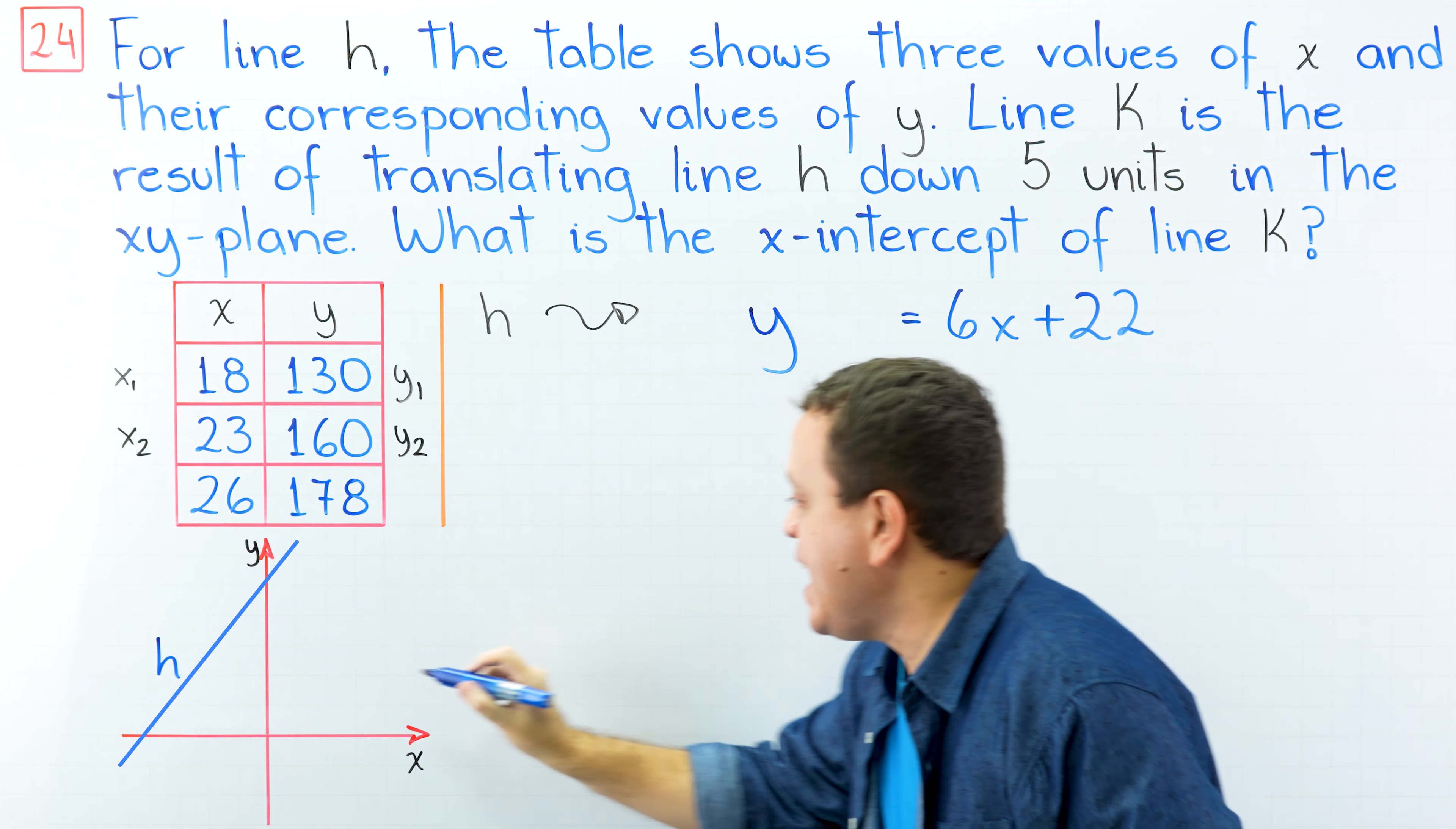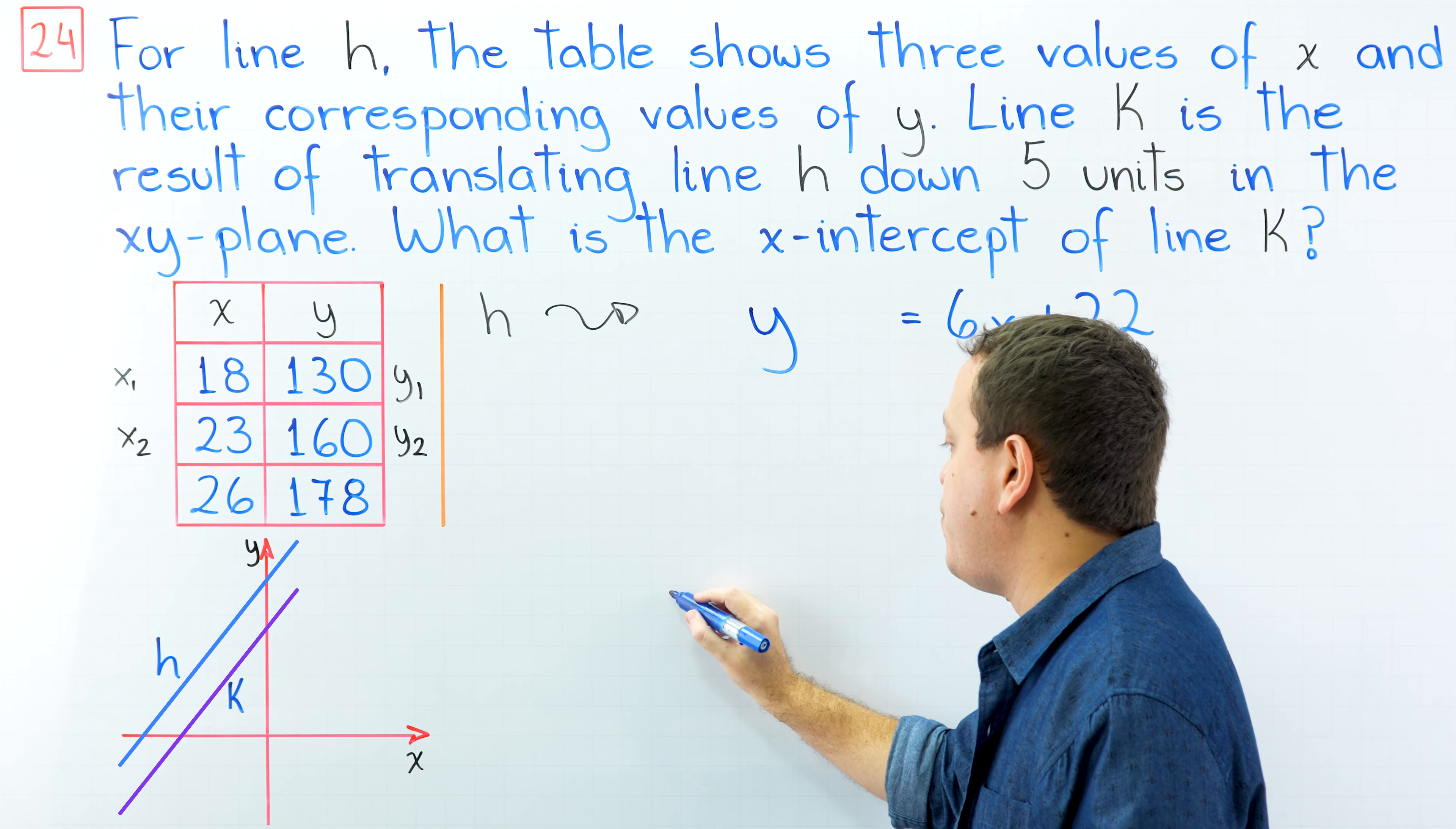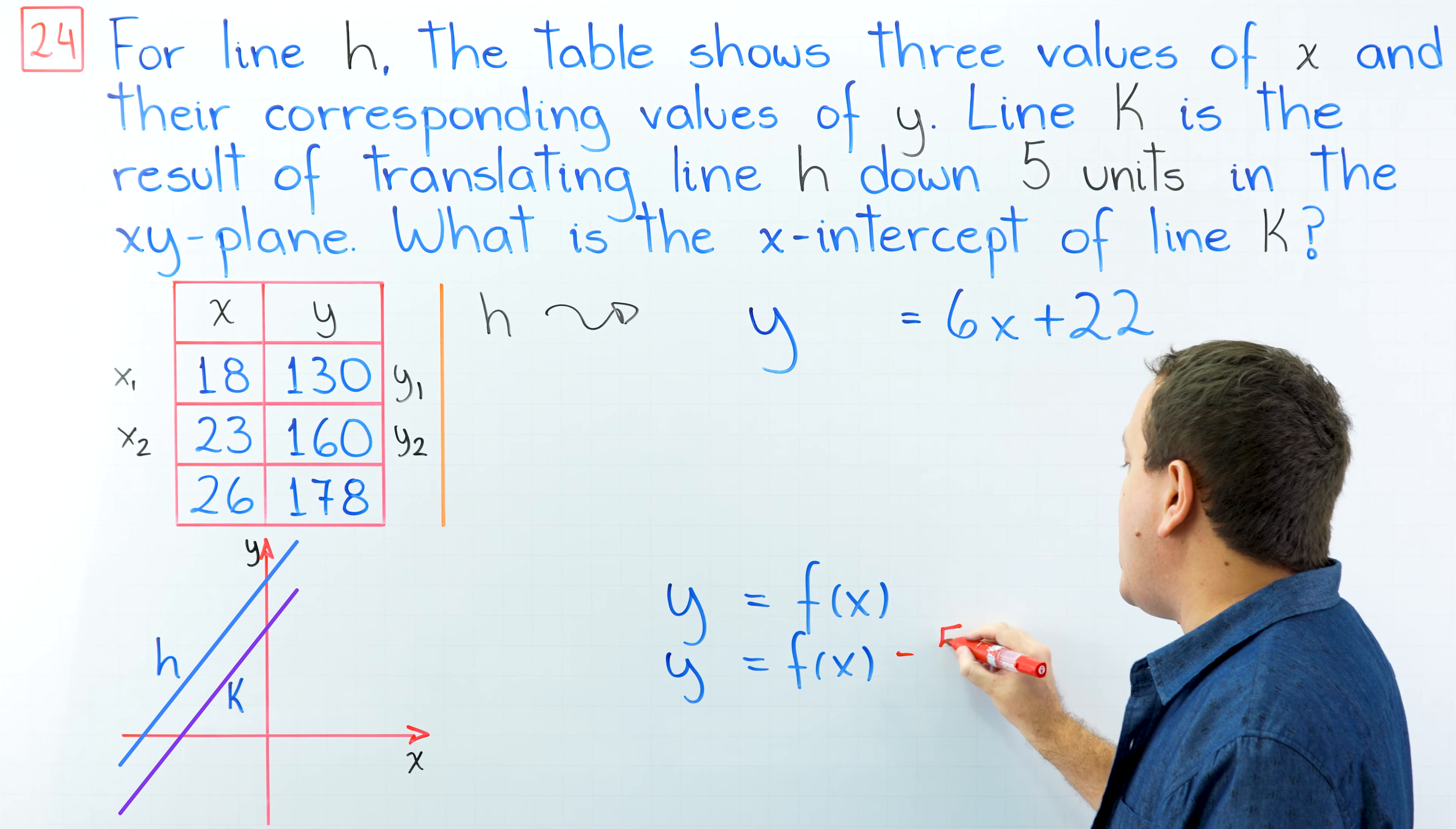We also know that line k is the result of translating line h down 5 units in the xy plane. Can we determine the equation of line k? Yes, we can. At this point, we must remember that if we have the graph of the function y equals f(x), and then we move this graph down 5 units in the xy plane, the equation of the new graph is going to be y equals f(x) minus 5.